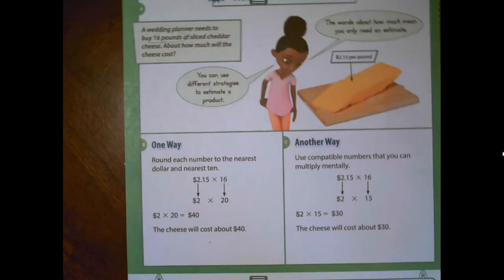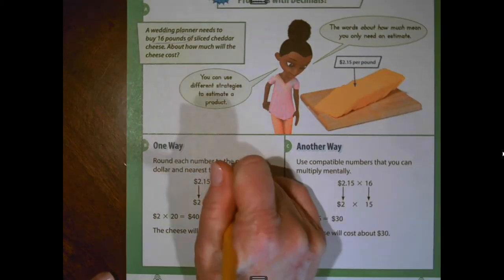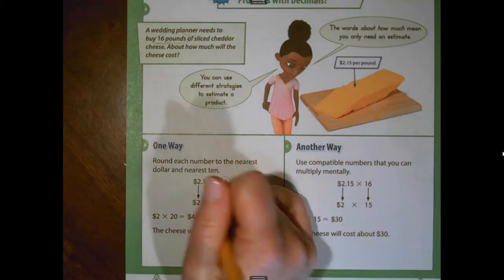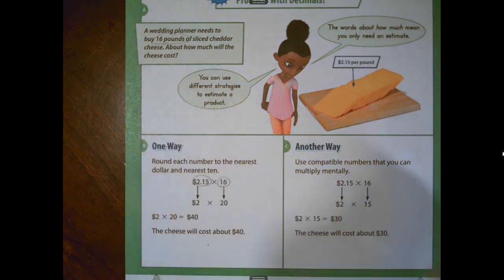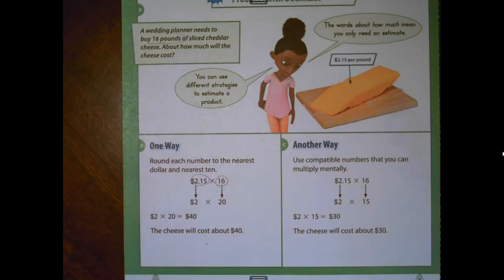We know that we're multiplying because we're going to need to make 16 groups of $2.15. So let's look at the rounding. Just like with whole numbers, we're going to round one of our factors to the nearest whole number. I'm going to use 16 and 16 rounds to 20 and I'm going to round $2.15 to the nearest whole dollar to two. So if we multiply two times 20, we get an estimate of the cheese costing about $40.